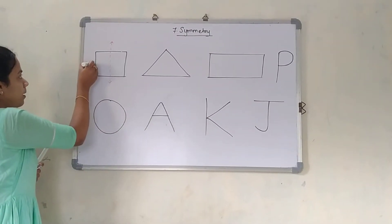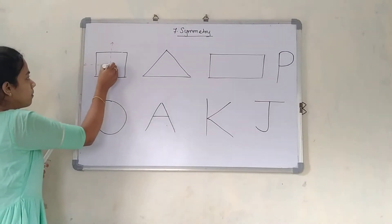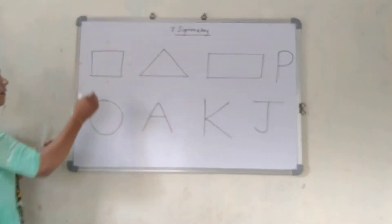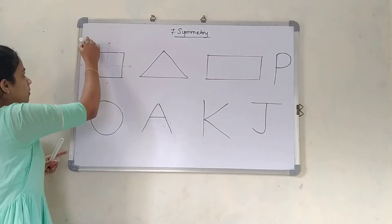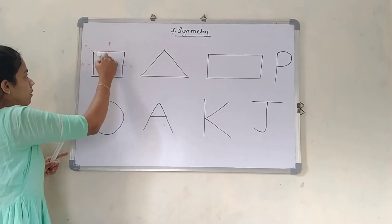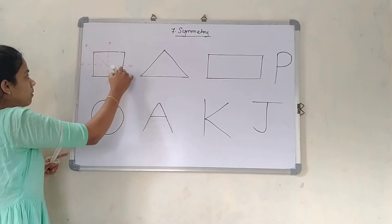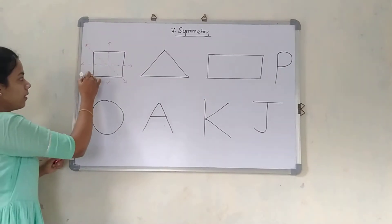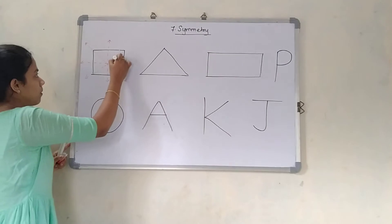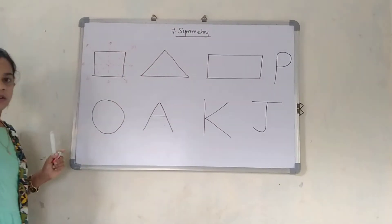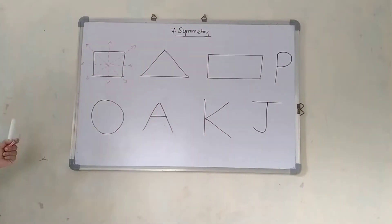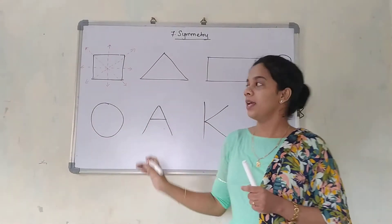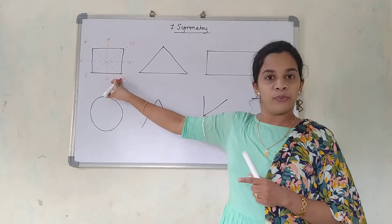I can divide it like this also, and like this also, and the same way like this also. So here there are four axes of symmetry, as you can clearly see. So yes, this is a symmetrical object.